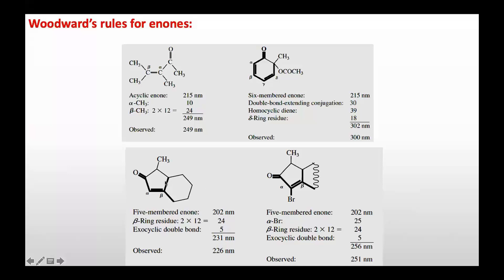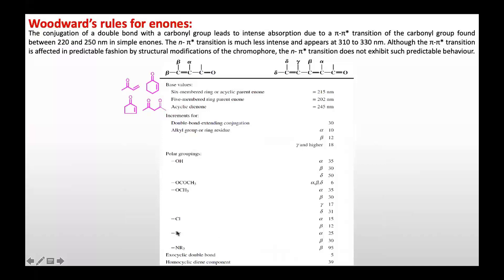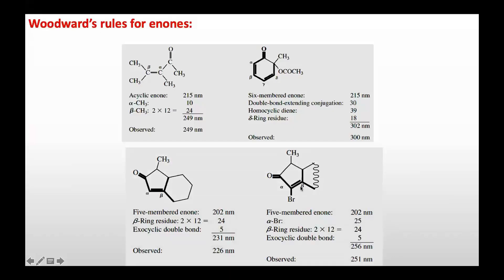This is another example of a five-membered ring enone. The parent value is 202 nanometers. There is one halide — bromine — at the alpha position. Bromine at the alpha position increases the value by 25. There are two ring residues at the beta position; one adds 12, so two add 24. This bond is exocyclic to the ring, adding 5. Adding all values gives a predicted lambda max of 256 nanometers. The observed value is 251 nanometers — very close.